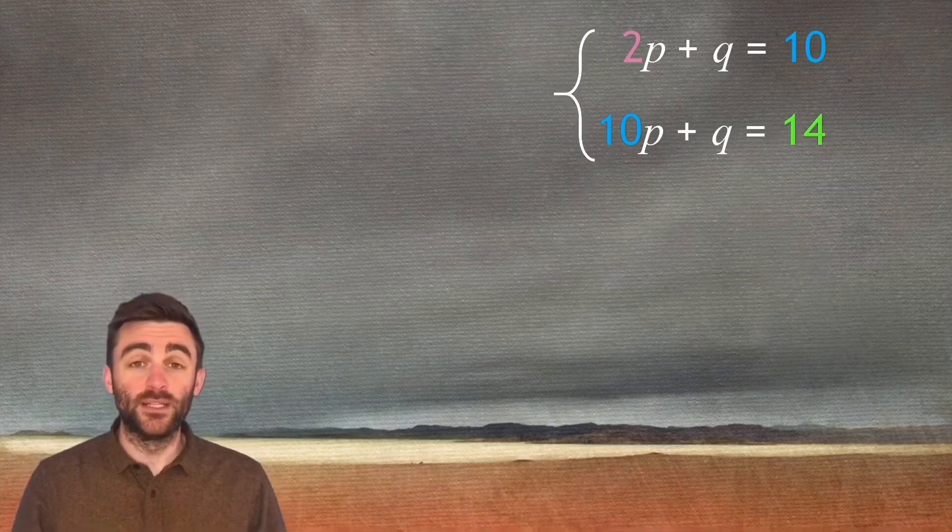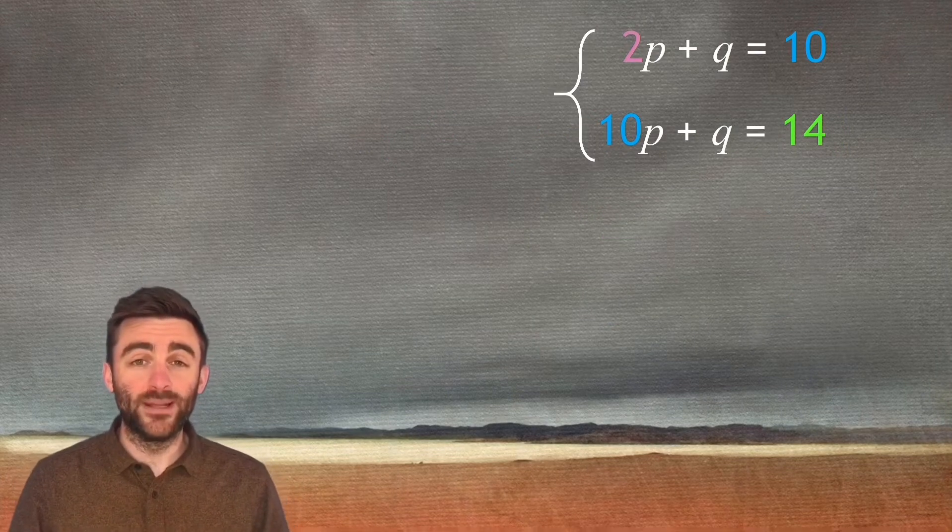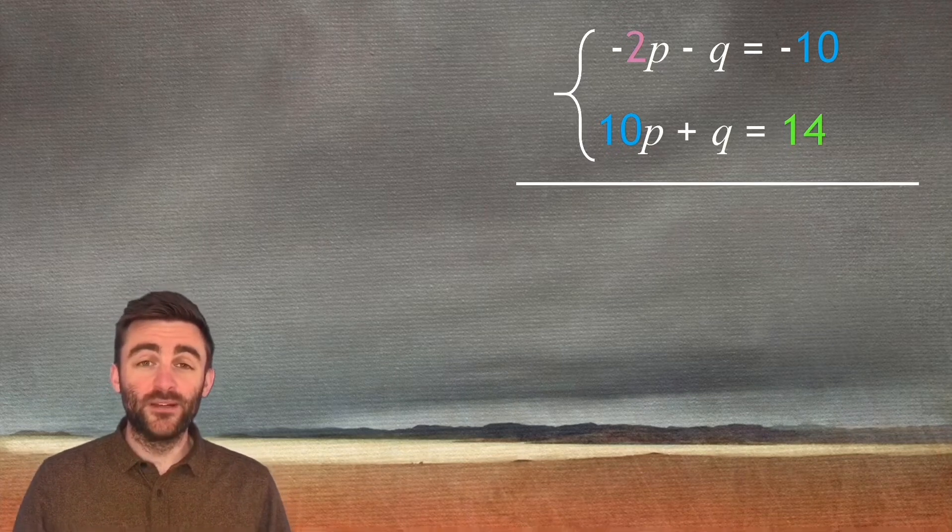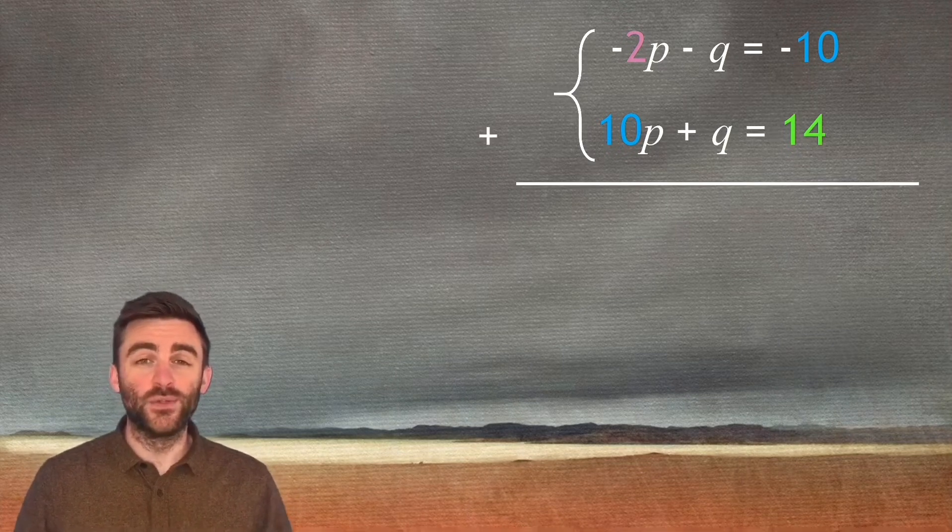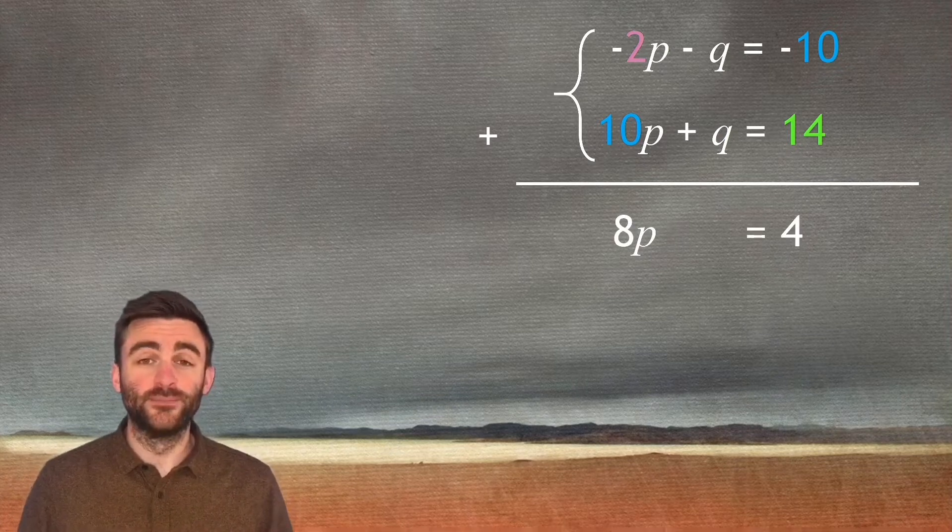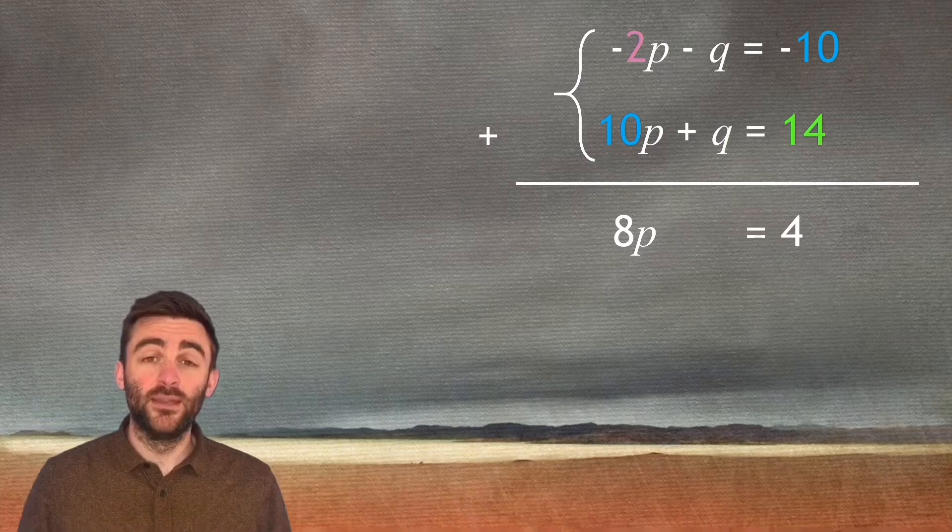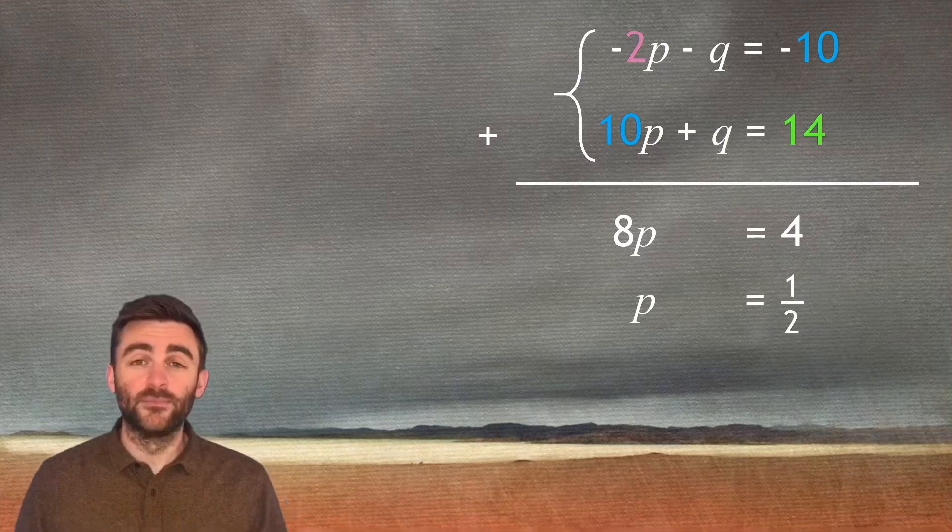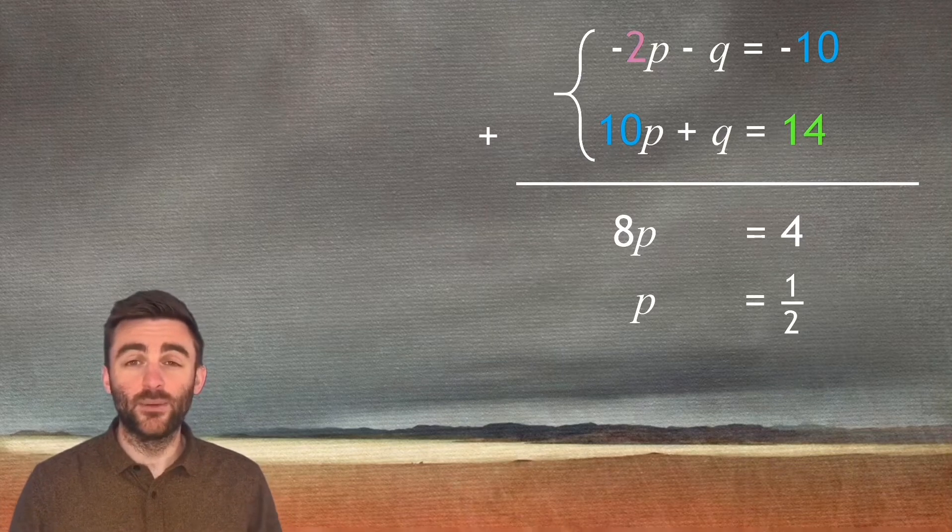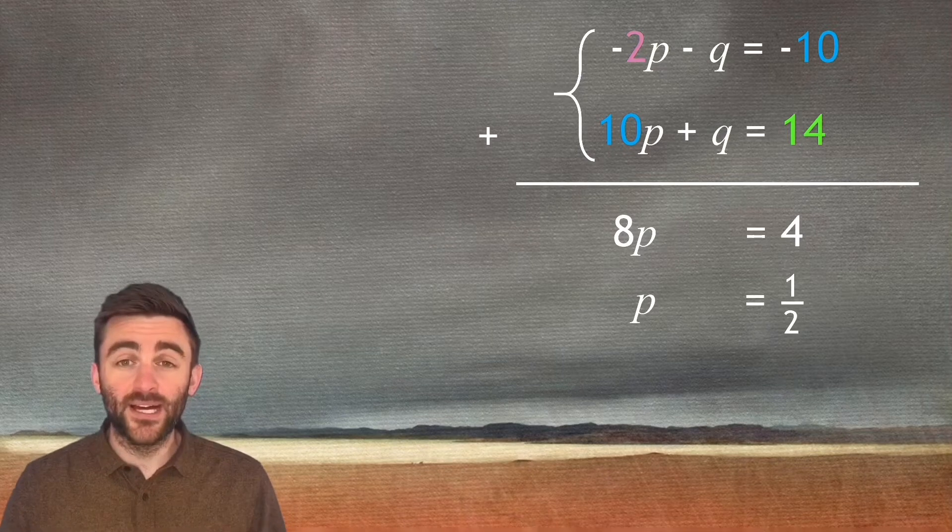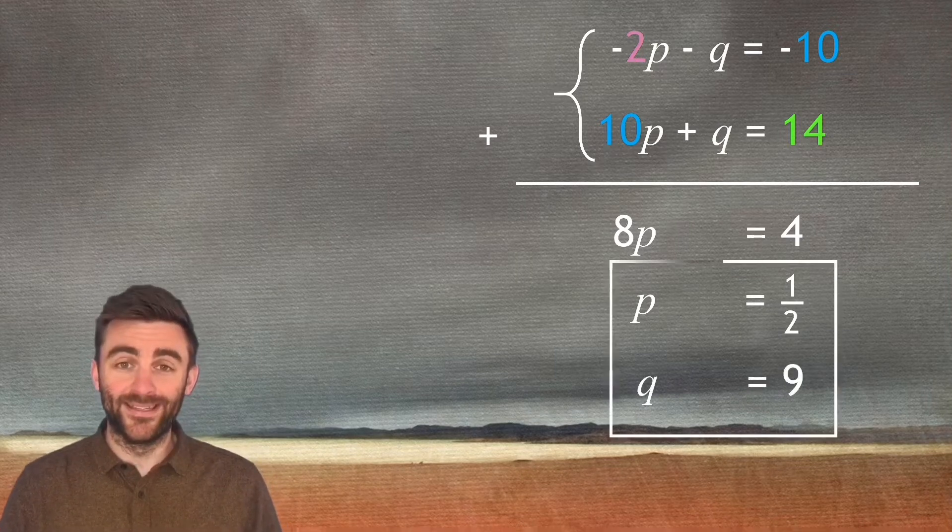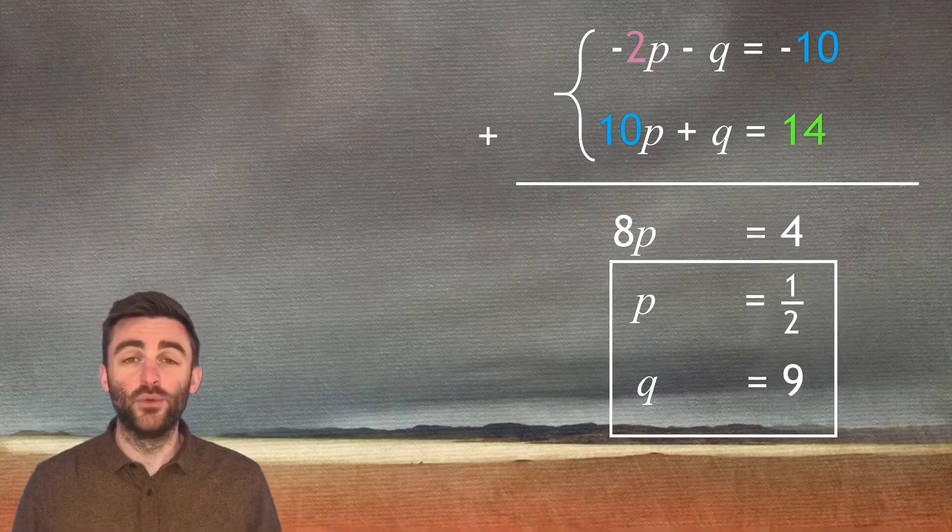So it will always be the case with recurrence relations that you can multiply one row through by negative one. That will allow us to cancel out the Q terms. So adding those two lines together, we will get 8P is equal to 4. And if 8P equals 4, then P is equal to a half. So we can take that value of P as a half and sub it back into one of the equations. I'll sub it into the second equation. So 10 times a half is 5. Take the 5 to the other side, subtract that Q is equal to 9. So P is a half, Q is 9.